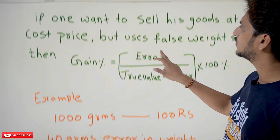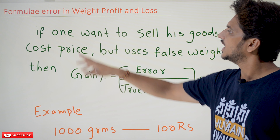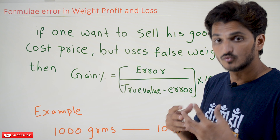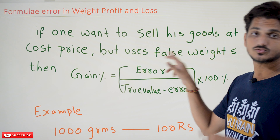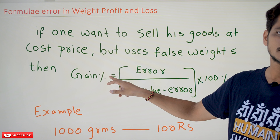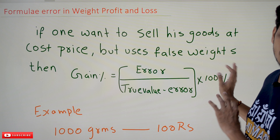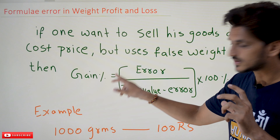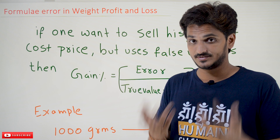Coming to today's class, first try to understand the equation, then we go with the proof. The formula for weight profit and loss: if one wants to sell his goods at cost price but uses false weights, then gain percentage is equal to error divided by (true value minus error), multiplied by 100%. Remember that carefully.